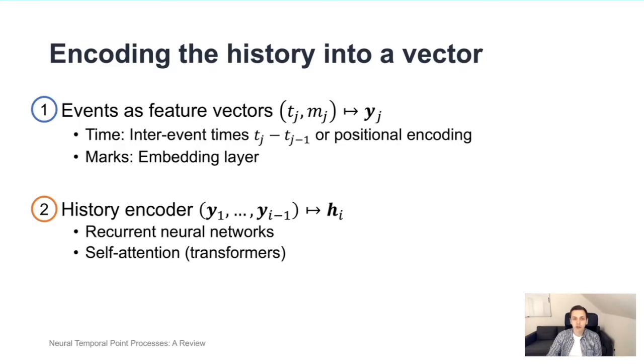The history encoder that takes a sequence of the feature vectors and converts it into the history encoding usually is based on one of two approaches. The first class are recurrent neural network-based approaches. The main advantage of these approaches is that they can process the entire sequence with N events in time that is linear in the number of the events. Self-attention models or transformer models, on the other hand, scale quadratically with the sequence length. However, they provide the advantage of being able to better capture long-range interaction between the events.